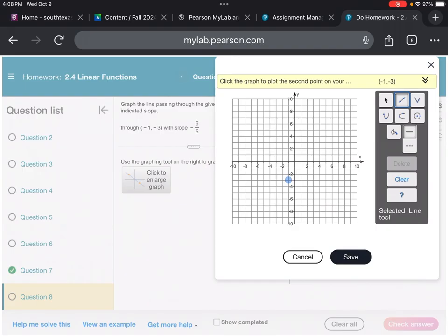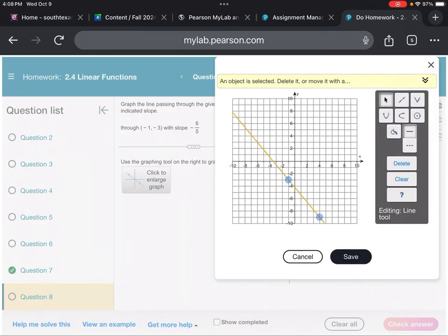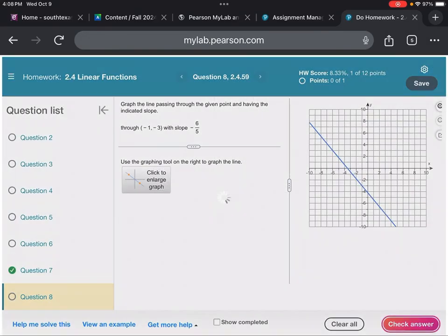Now from there, I'm going to count six spaces down: one, two, three, four, five, six. And then to the right five: one, two, three, four, and five. Right there. I'm going to save that.